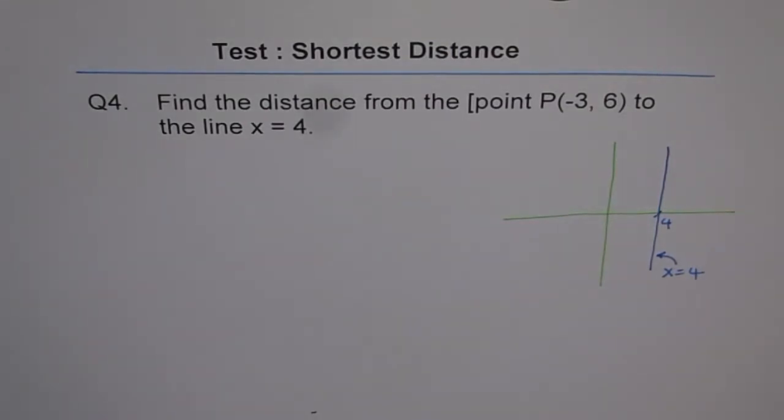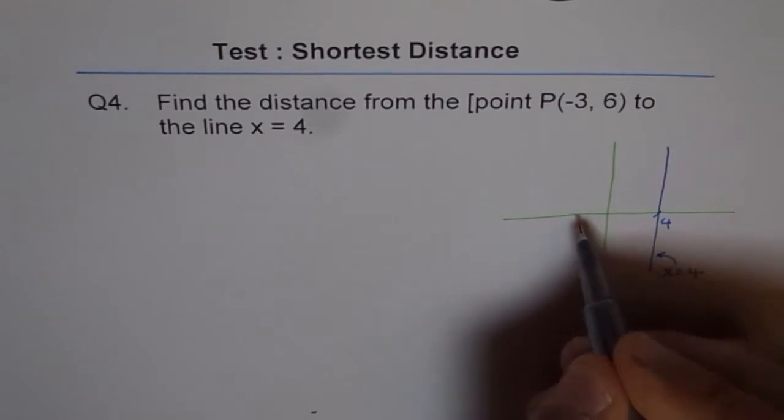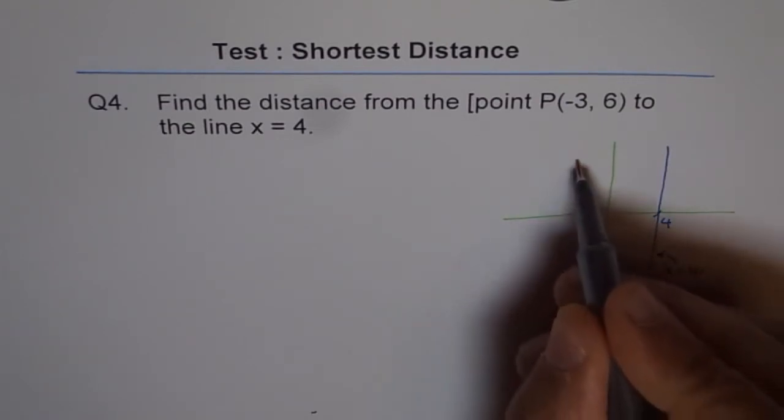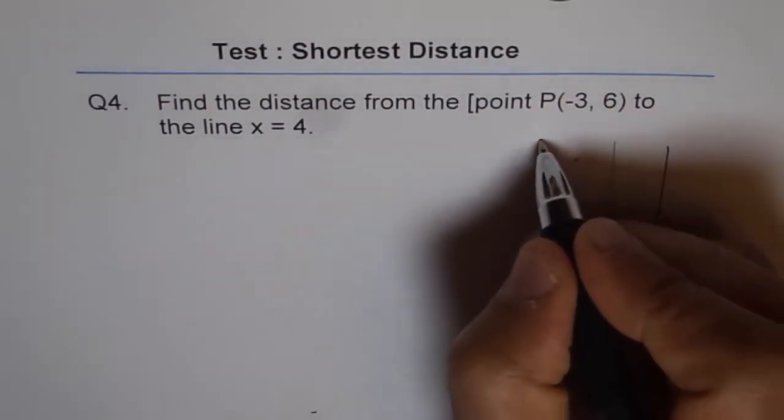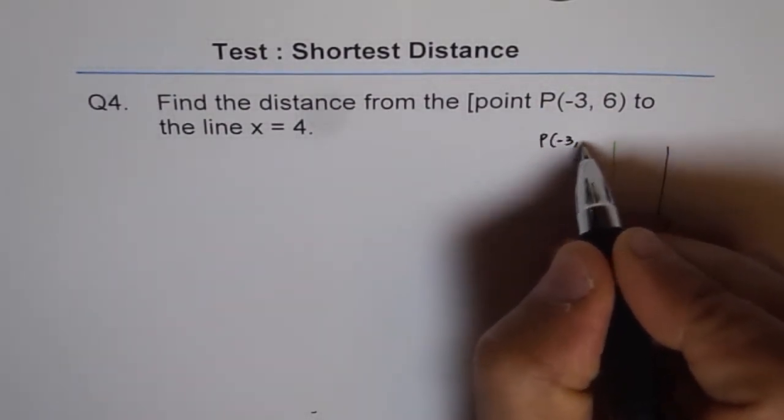And we are given a point here. The point is minus 3 and 6. So let's say this is our minus 3 and that's 6. Let's say this is the point P(-3, 6). So let me write down point P as minus 3 and 6.